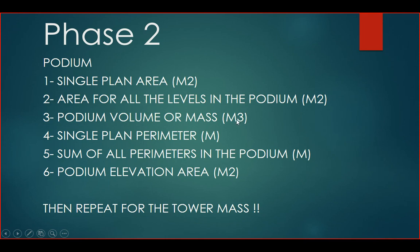You can also convert that into cost estimation for the building if you're using a square meter cost basis. Then we'll define the podium volume in cubic meters, find the single plan perimeter in length units — useful for things like the skirting system — and calculate the sum of all perimeters for the podium multiplied by the number of levels. Finally, for podium elevation cladding, multiply the perimeter by the height and number of levels to get the overall elevation area in square meters.